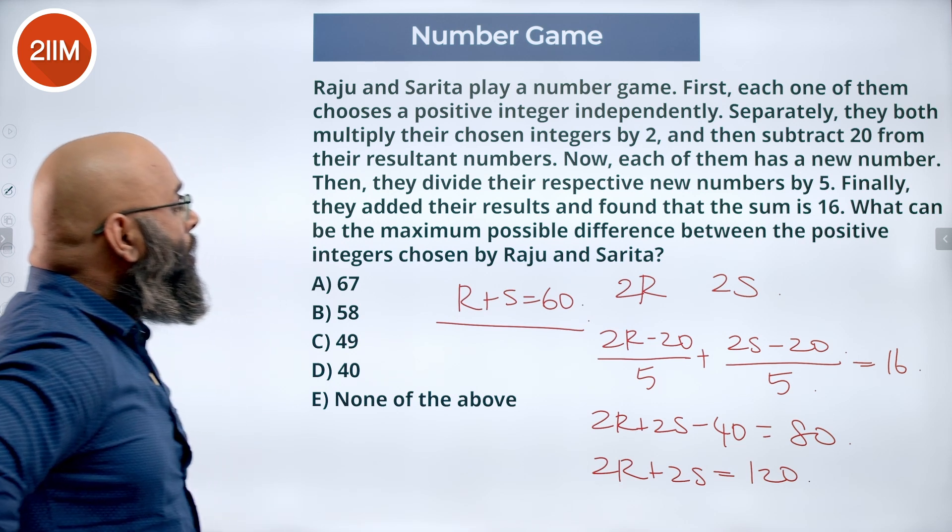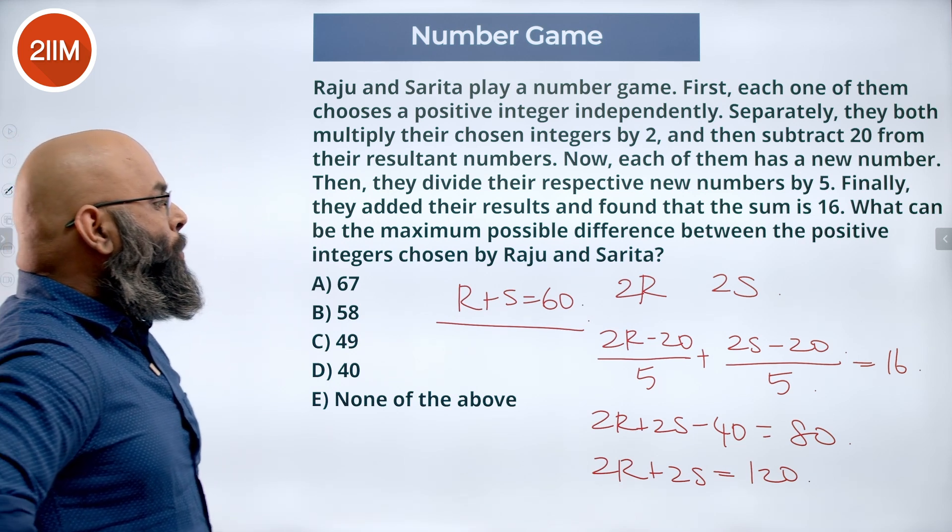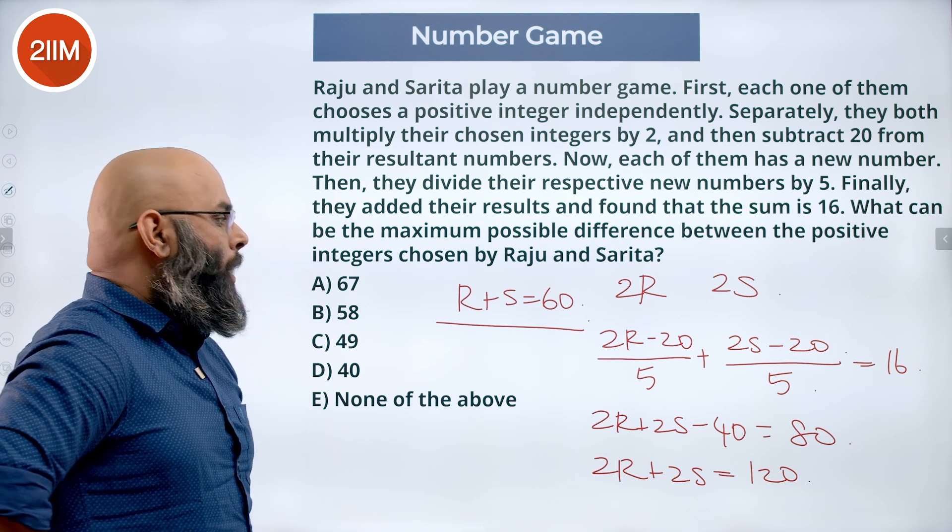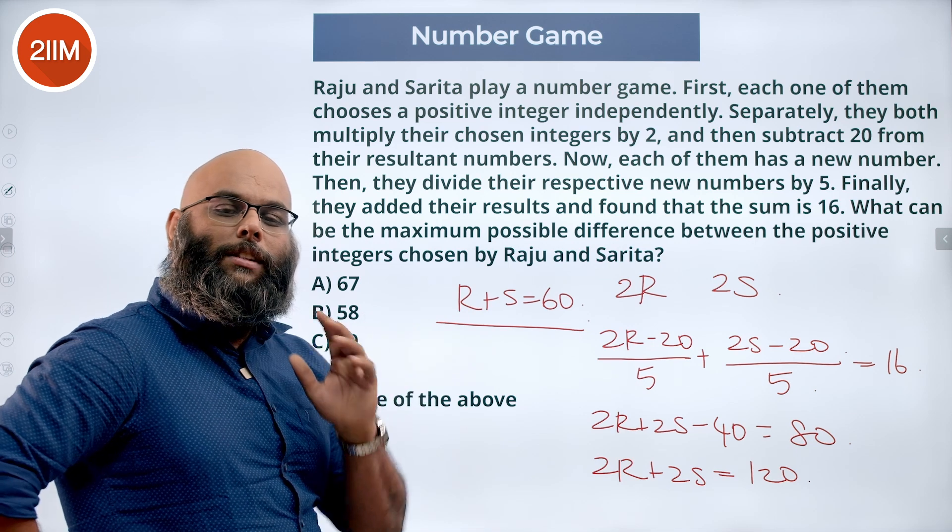So we have this. Now the question is: what can be the maximum possible difference between the positive integers chosen by Raju and Sarita? Now they are asking what is the maximum difference that they can have?